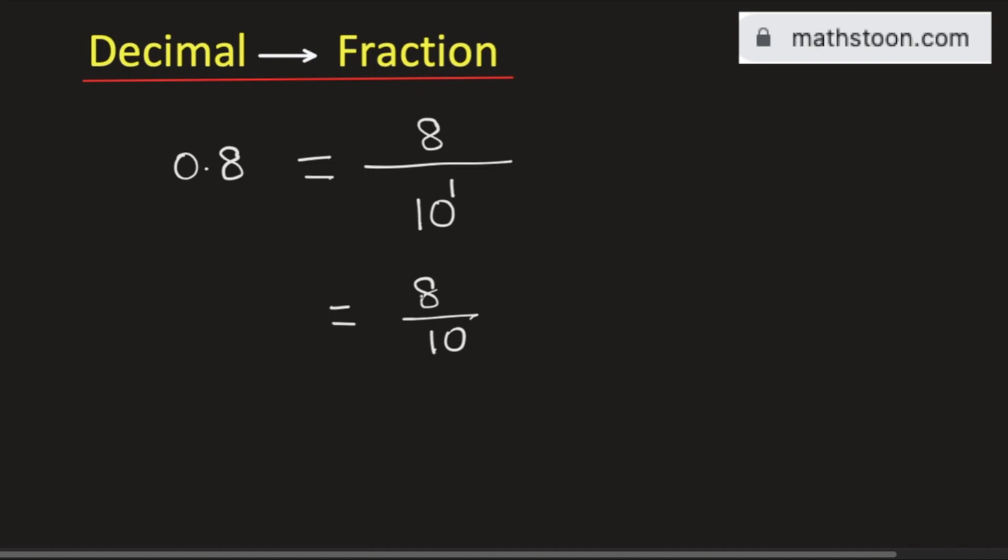Now see that 2 is a common divisor of 8 and 10. So we will write them as a product of 2 times something. Doing so we will get 2 times 4 divided by 2 times 5.